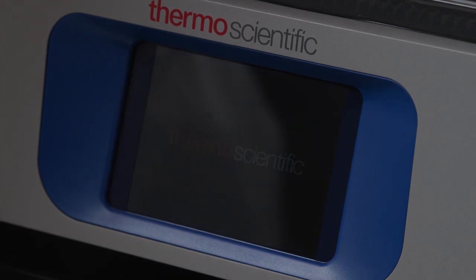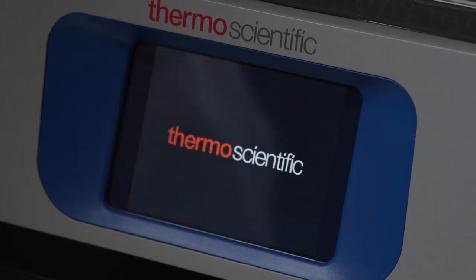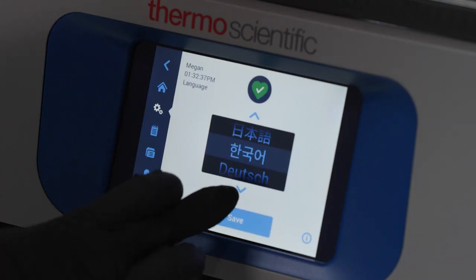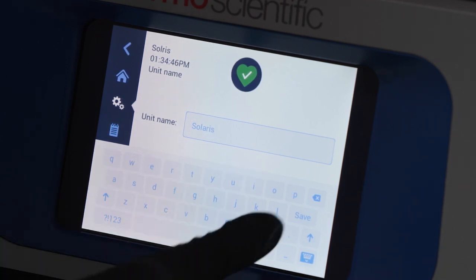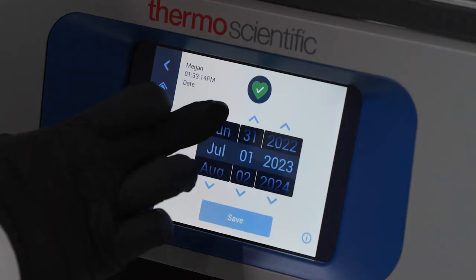The first time you turn on your new Solaris temperature-controlled benchtop shaker, you'll progress through a startup process. During this process, you can select your language from ten different options, enter a name for your shaker, and set your city, country, date, and time.